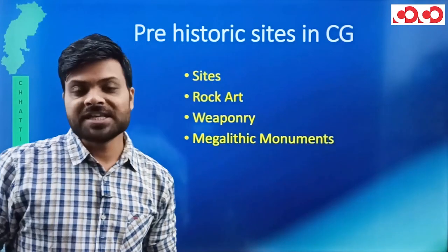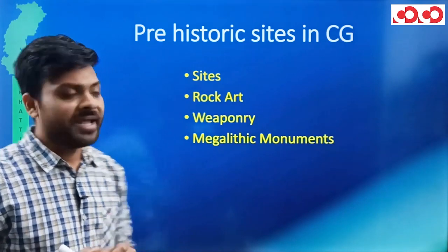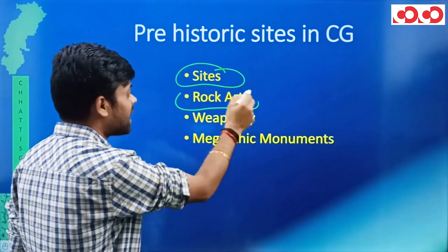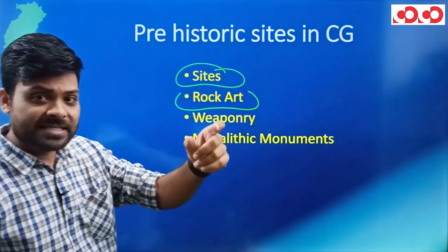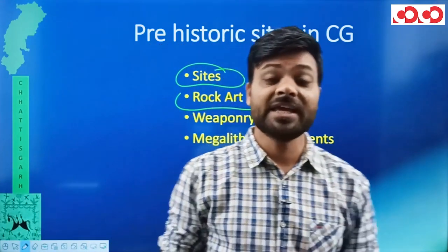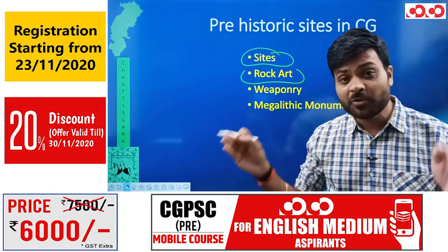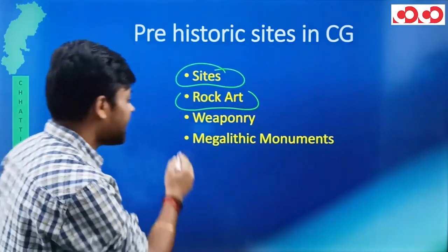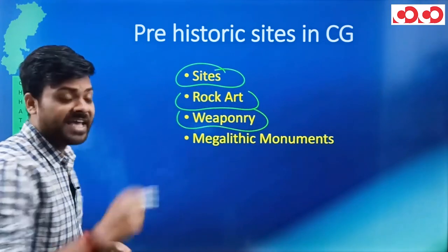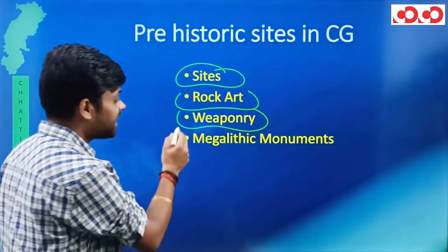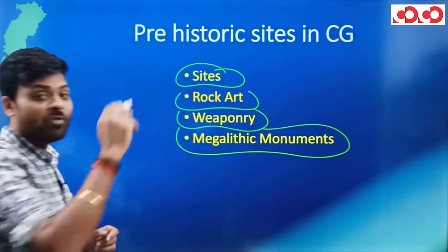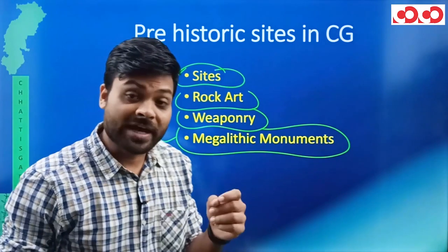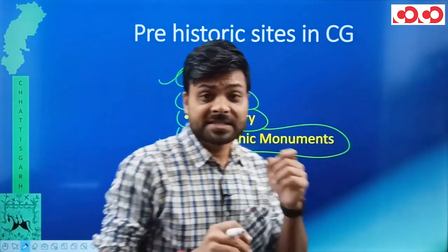So, these are the pre-historic locations. Basically, what we have to learn is: first, we will see some important sites. Then, we will see some rock arts — there are some important sites where you can find a particular type of rock art. Finally, we will see some megalithic monuments and the sites where they are found.